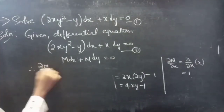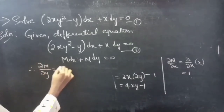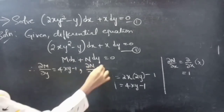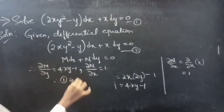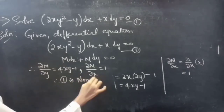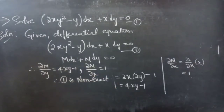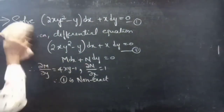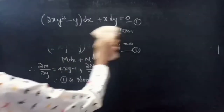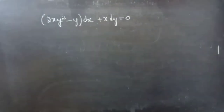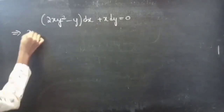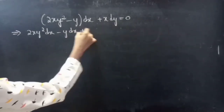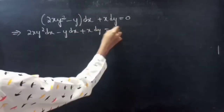Therefore ∂M/∂y = 4xy − 1 and ∂N/∂x = 1, so equation 1 is non-exact. Now consider the given equation. We can write this as 2xy² dx − y dx + x dy = 0.